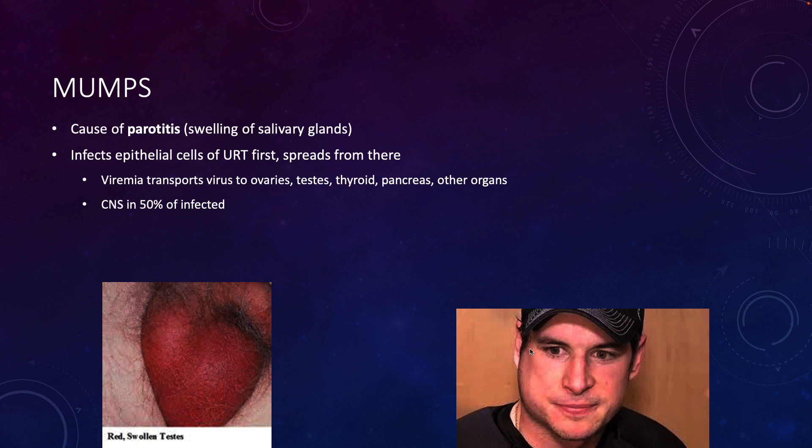There is a picture of a patient with swollen testes from mumps. When the virus is acquired, it's an upper respiratory virus, but it can go viremic — unlike parainfluenza — and go to these other tissues. In some patients, it can also go to the central nervous system.